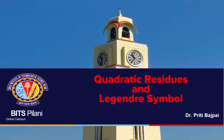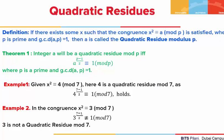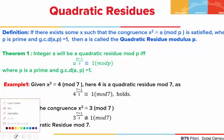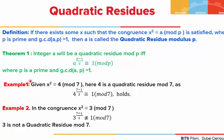Hi students, today we are going to do another topic in number theory: Quadratic Residues and Legendre Symbol. Let us first understand what quadratic residues are. If there exists some integer x such that the congruence x² ≡ a (mod p) is satisfied, we say that a is a quadratic residue modulus p, provided the GCD of a and p is 1.